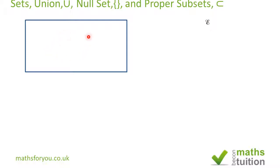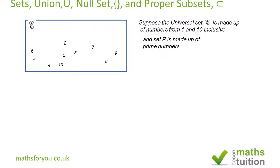In here we've got all the elements in the universal set, and we're told that the universal set is made up of numbers from 1 to 10 inclusive. So in here we have numbers 1 to 10.